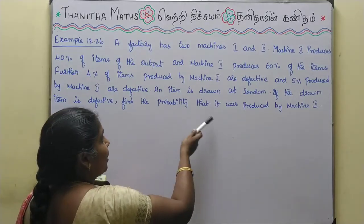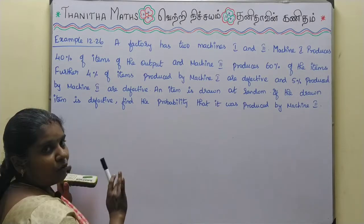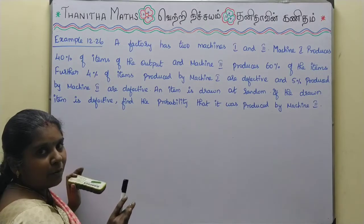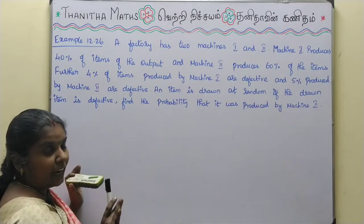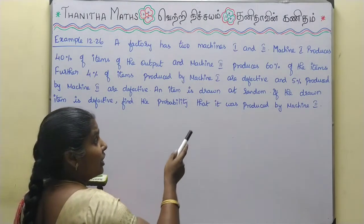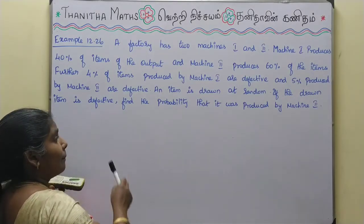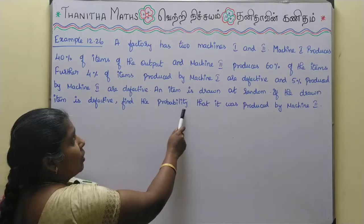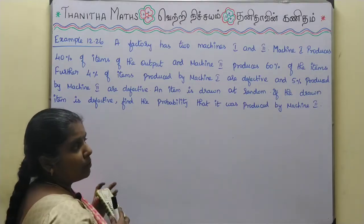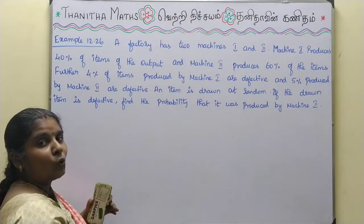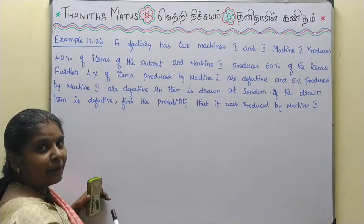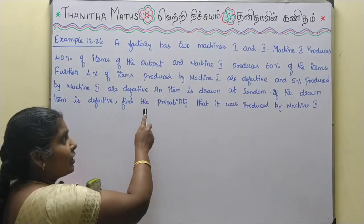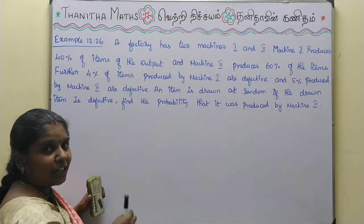If the drawn item is defective, find the probability that it was produced by machine 2. If the item is defective, we choose the probability using Bayes' theorem and apply the conditional probability.